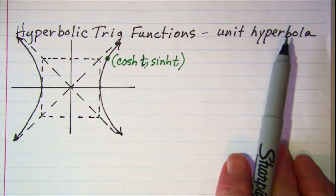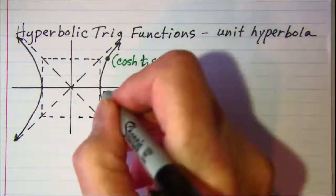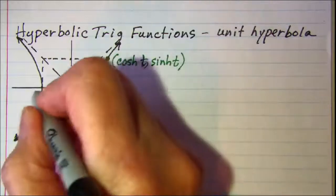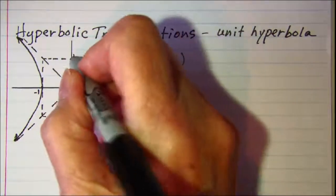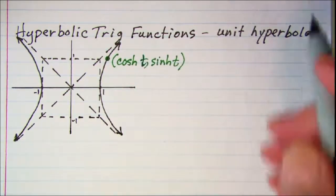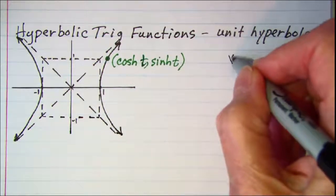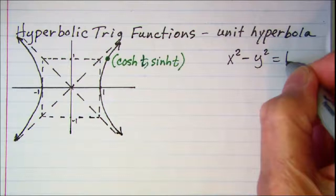And the equation for a unit hyperbola which has vertices at 1 and negative 1, and this is also 1 and negative 1. The equation for a unit hyperbola is x squared minus y squared is equal to 1.